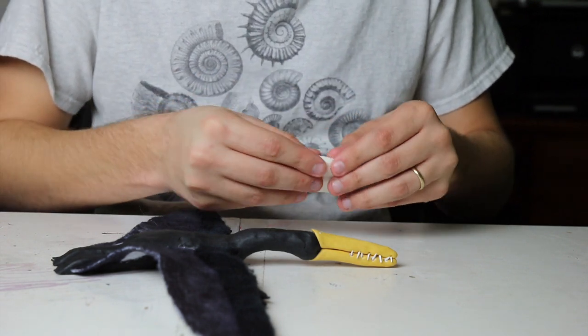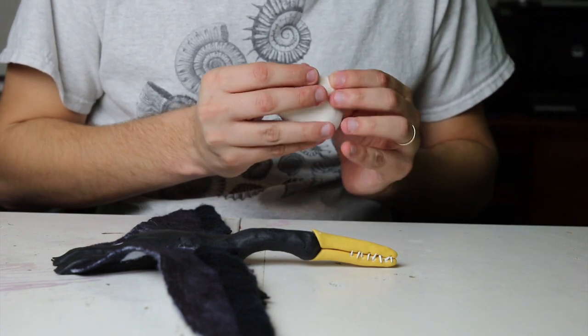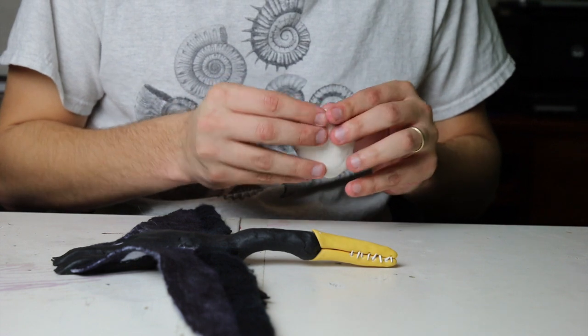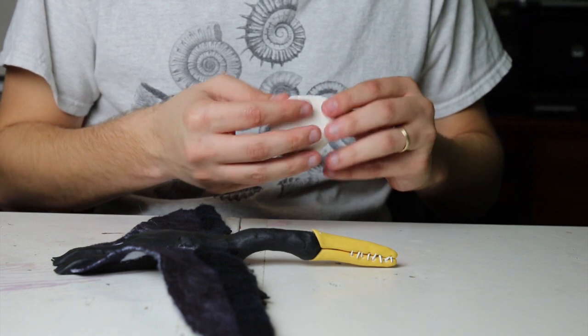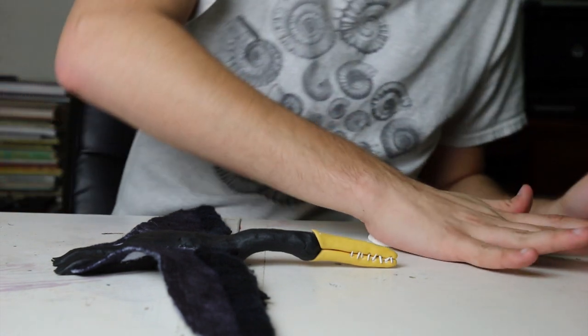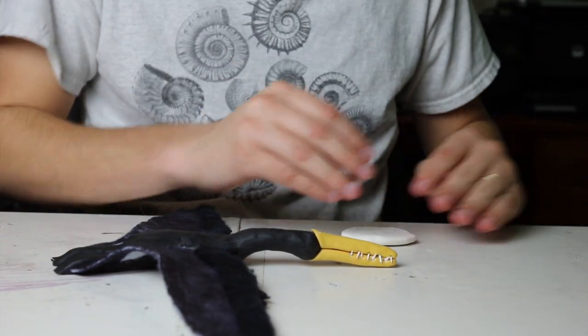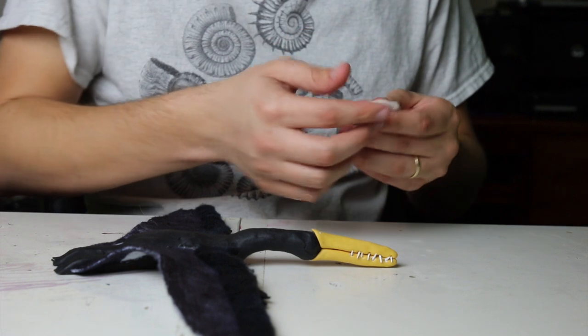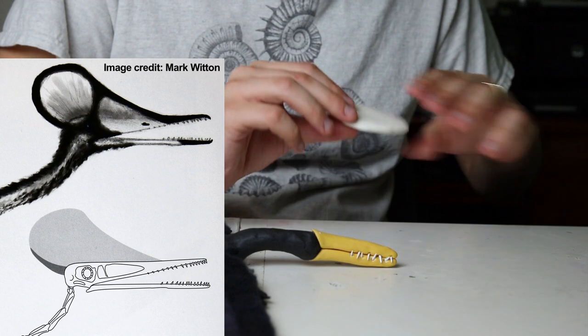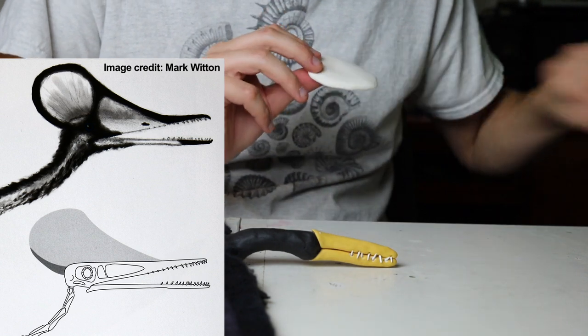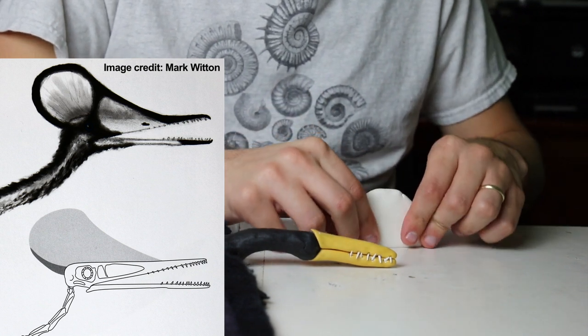Also, most pterodactyl skeletons that have been found were not fully grown. There's only one adult skull from a pterodactyl that's been discovered. So the crest probably would have gotten bigger than what we've seen in the juvenile skeletons as the creature got older. So I'm completely speculating on what the shape and size of this crest would be here. I'm basing it off of this speculative crest shape from Mark Witten which seems to have a lot of thought put into it as to why it would look like this.